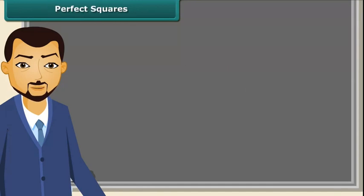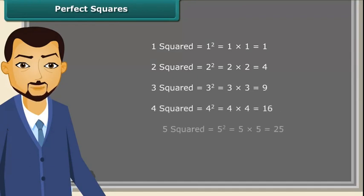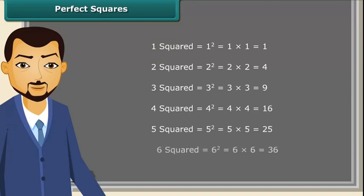Let us read: 1 square is 1, 2 square is 4, 3 square is 9, 4 square is 16, 5 square is 25, and so on.